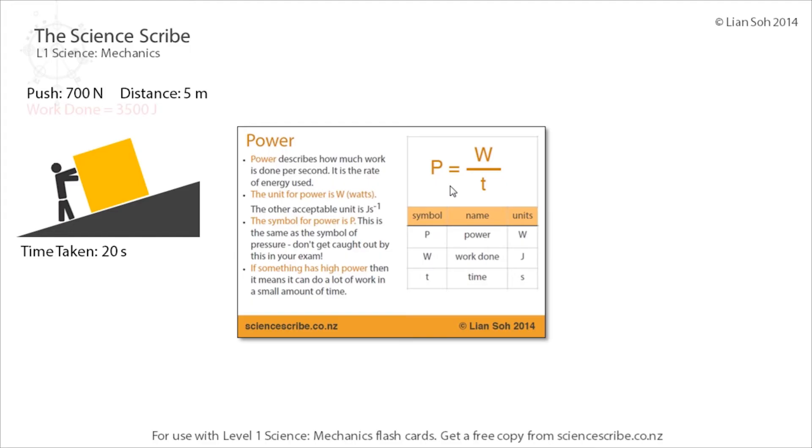If I wanted to calculate the power, I would have to take work and divide it by time, but I don't have that so I have to work that out. Now work done is just force times distance, so 700 times 5 gives me 3500 joules of work being done. Put that into the power formula and it gives me 175 watts.